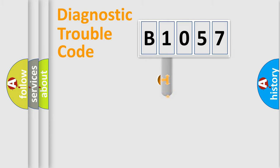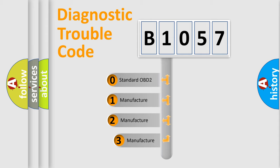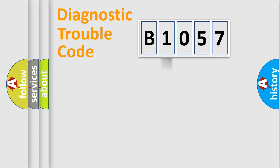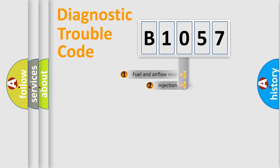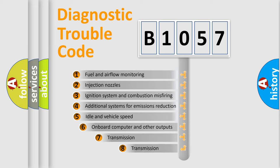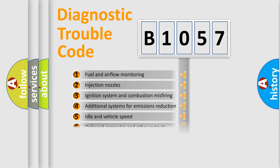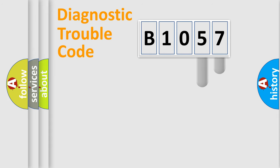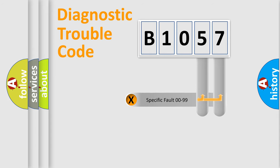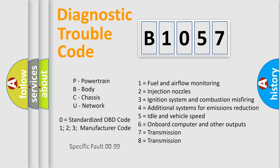This distribution is defined in the first character of the code. If the second character is expressed as zero, it is a standardized error. In the case of numbers 1, 2, or 3, it is a more manufacturer-specific expression of a car-specific error. The third character specifies a subset of errors. This distribution is valid only for the standardized DTC code, and only the last two characters define the specific fault of the group.